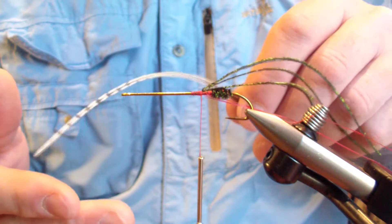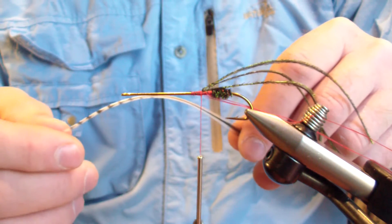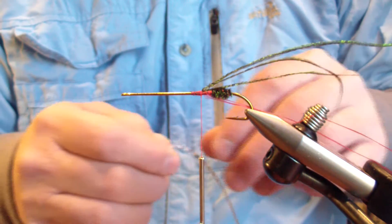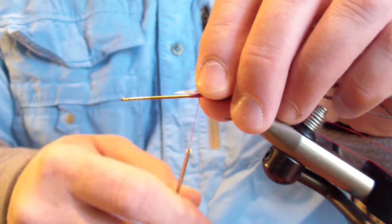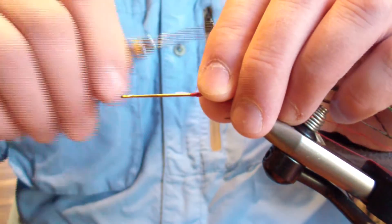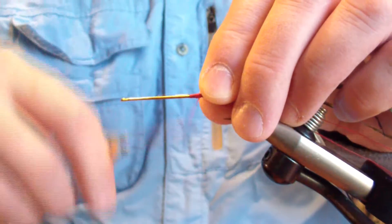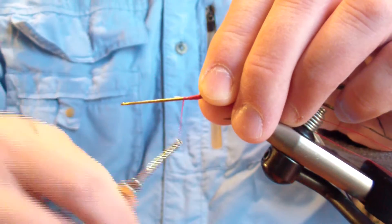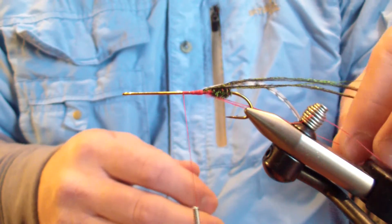If I'm tying on an eight, then I'm going to tie a twelve size hackle. That's the proportion that I like when I'm tying hackle in with hurl. I'm going to tie that in tip first. I'm not going to try and do anything to it. I'm not going to sweep it back.